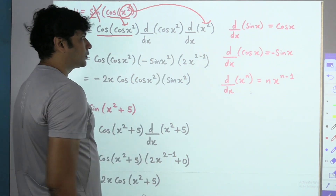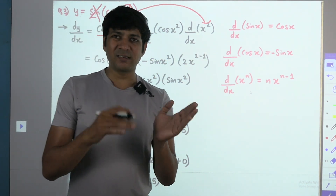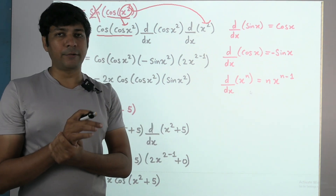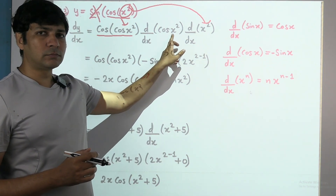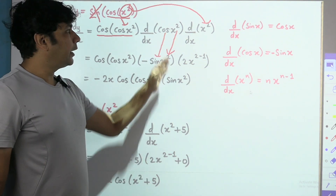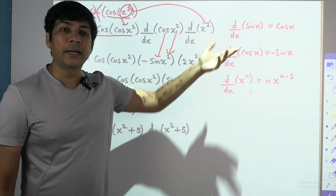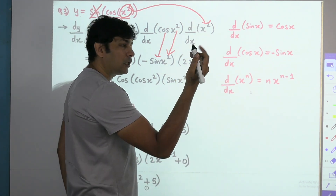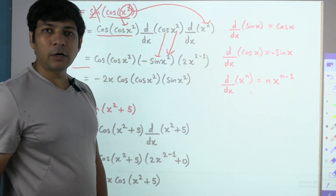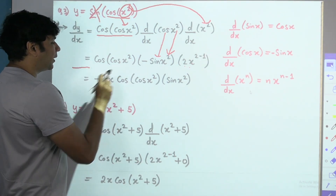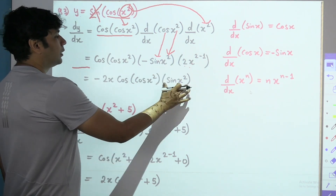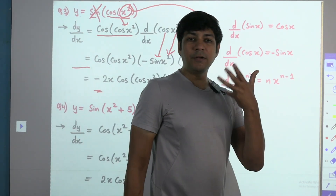Stop differentiating when you reach a direct formula implementation. Differentiation of cos x is −sin x, so cos(x²) differentiates to −sin(x²), into differentiation of x², which is 2x. When writing the answer ethically: there is only one minus, write it first, then number, then algebra, then trigonometry — giving cos(cos(x²)) · (−sin(x²)) · 2x = −2x · cos(cos(x²)) · sin(x²). This is a 3-level chain problem.